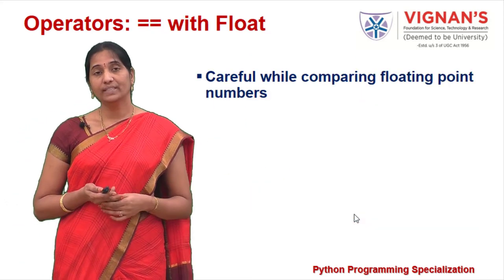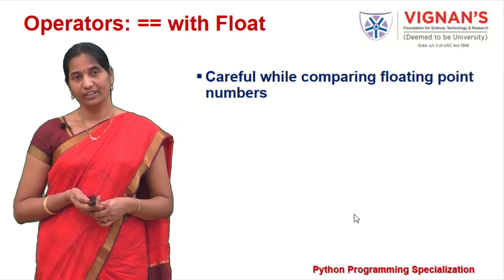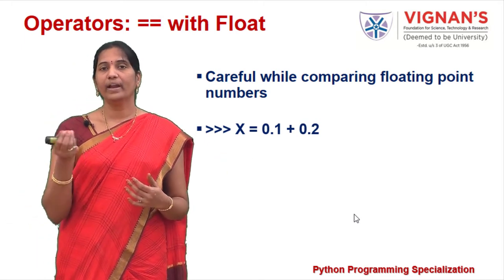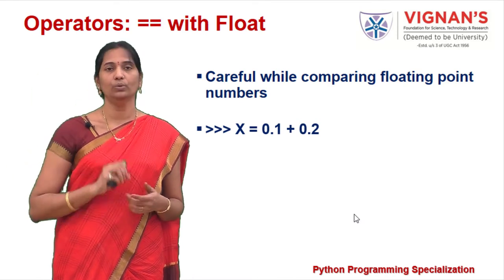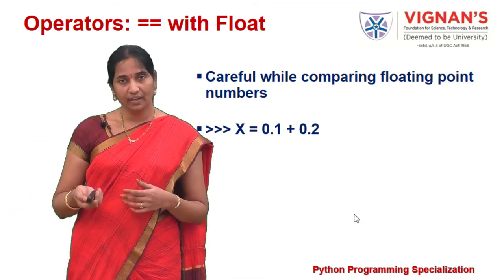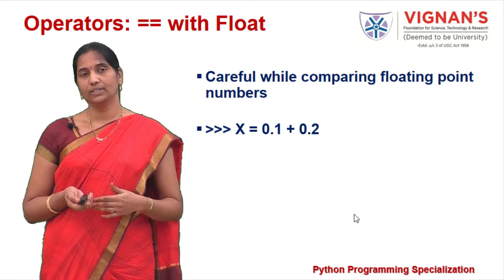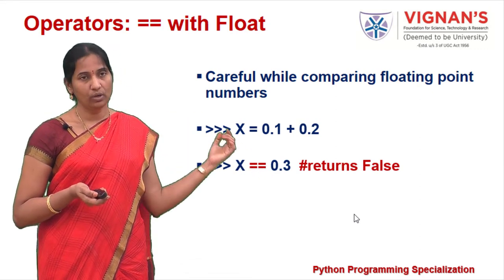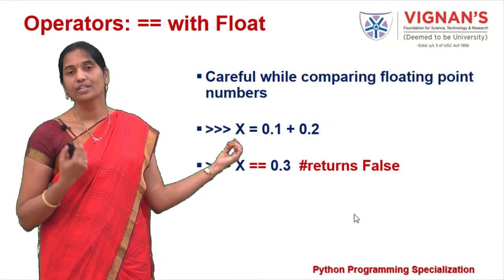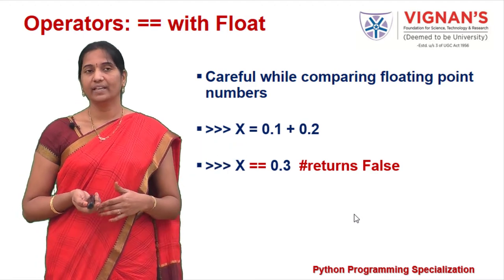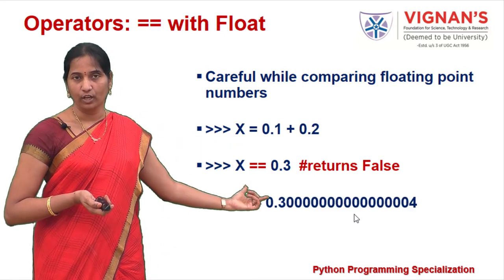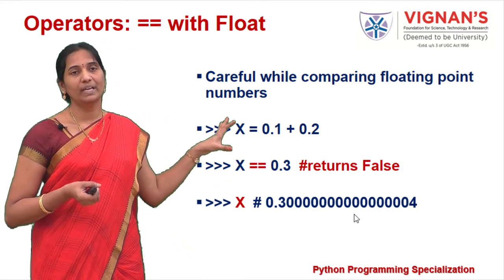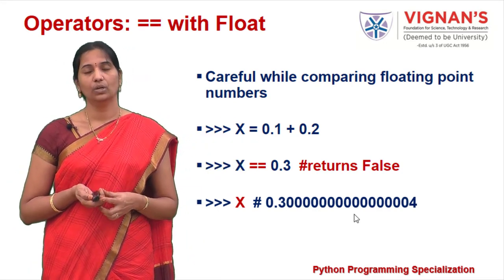When using the equality operator with floating point values, be careful. For example, if x equals 0.1 plus 0.2, we might assume x contains 0.3. But due to floating point representation, x actually contains a slightly different value, so comparing x with 0.3 using the equality operator returns false.